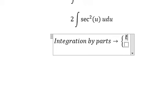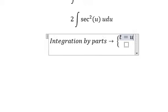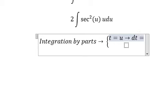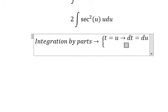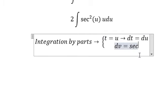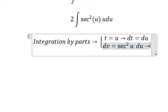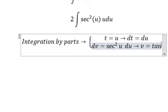So we have t equals to u, dt equals to du, dv equals to secant squared u du, so v equals to tan u.